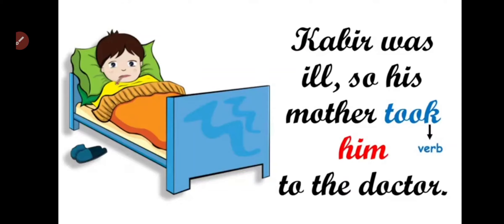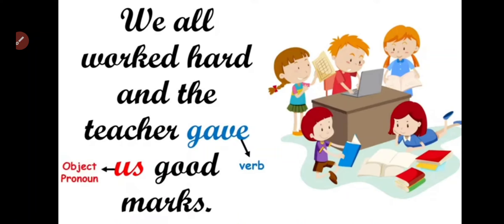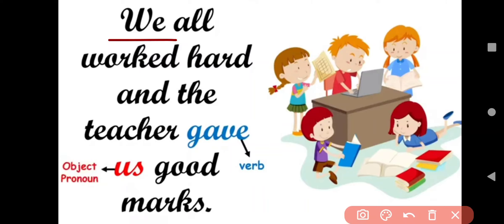Kabir was ill, so his mother took him to the doctor. Kabir is receiving the action, and since Kabir is a boy, we use 'he' as the subject pronoun. When we have 'he' as the subject, we use 'him' as the object pronoun. Next: we all worked hard and the teacher gave us good marks. Here, 'gave' is the verb and 'us' is the object pronoun, because 'we' is the subject receiving the action of getting good marks.